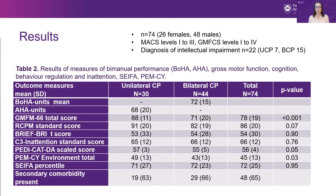Separate analyses were required as the assessments of hand function, the AHA and the BOHA, while they are very similar, are different measures. You may notice that there are differences between the groups of children. Children with bilateral CP experienced a greater range of challenges with respect to gross motor and cognitive function.